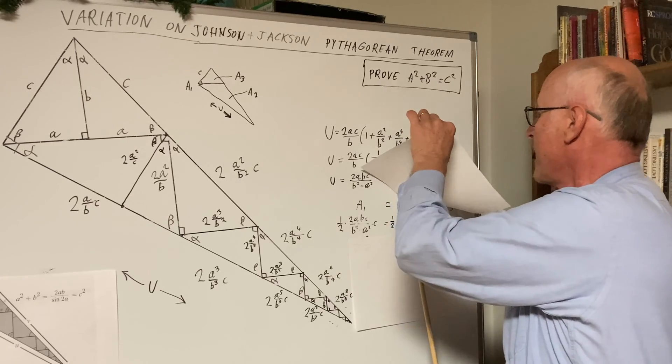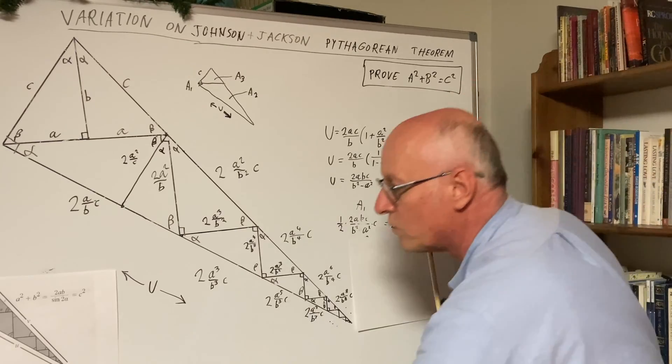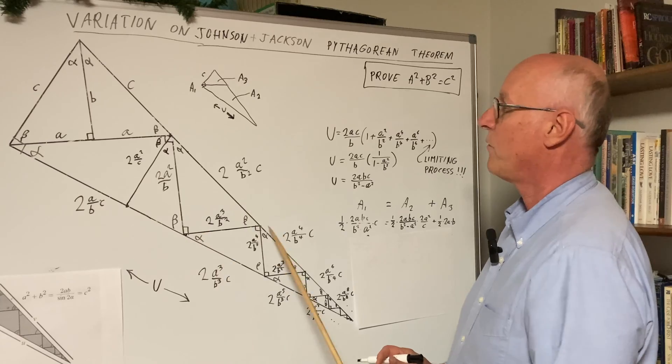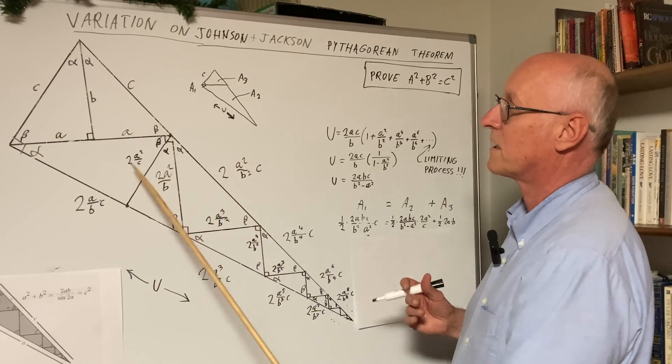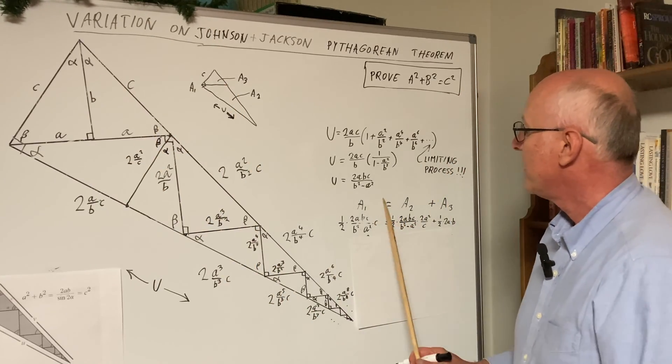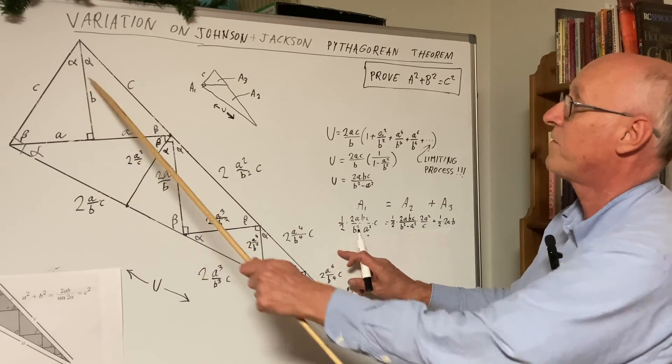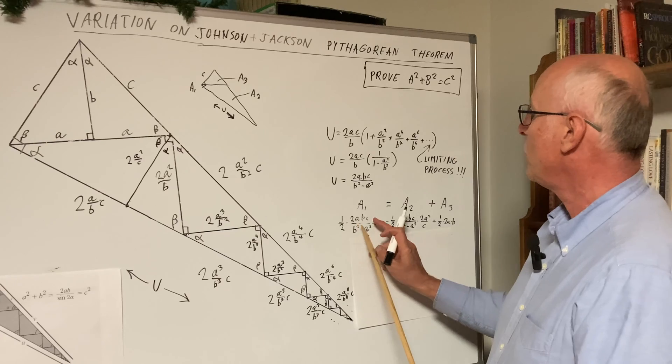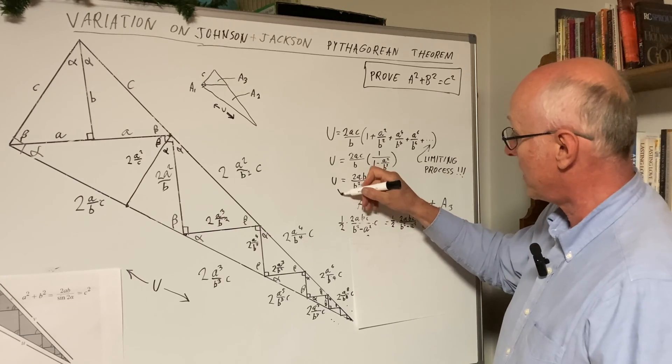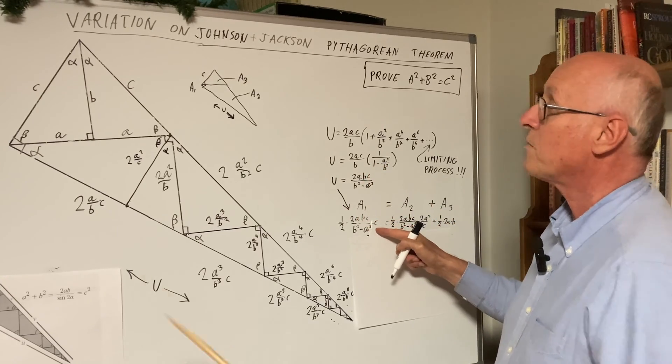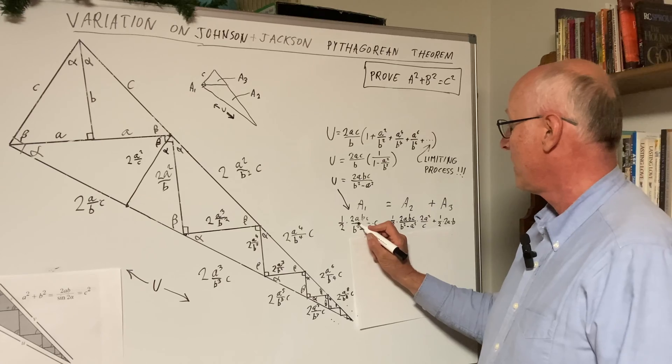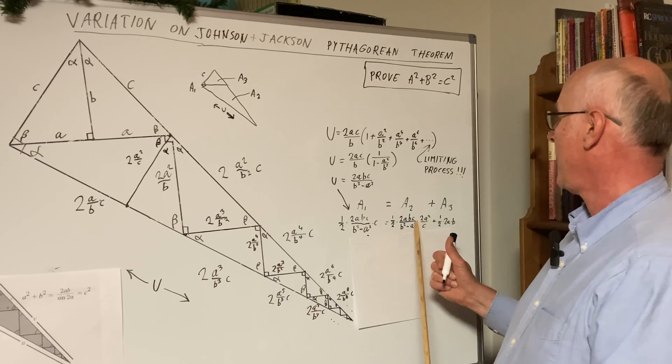Okay, so we go on. Our approach is to use area. I said a1 is equal to a2 plus a3. And now we can do it because we have all the necessary base and height that we need. So a1 is equal to 1 half, that's this big one, 2abc over b squared minus a squared. That's our u right here. You see it? Right there. Times c, which is the height. So that's the area of a triangle.